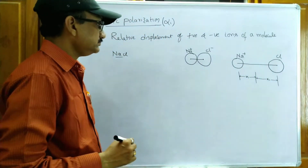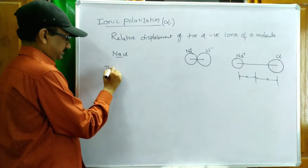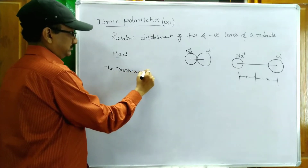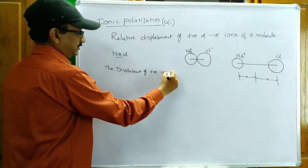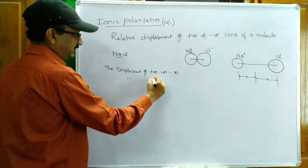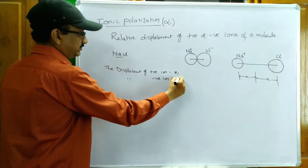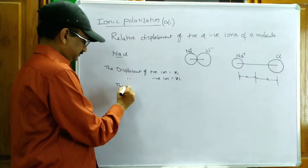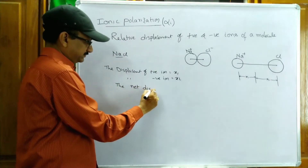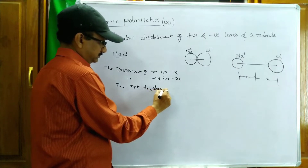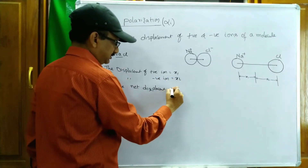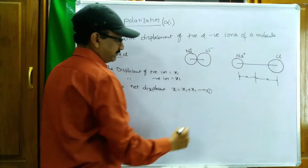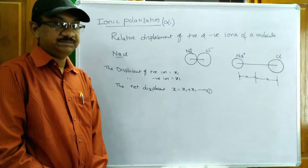The displacement of the positive ion is equal to x1, and the displacement of the negative ion is equal to x2. The net displacement of these two ions is x = x1 + x2. This is equation number 1, in the presence of an electric field.